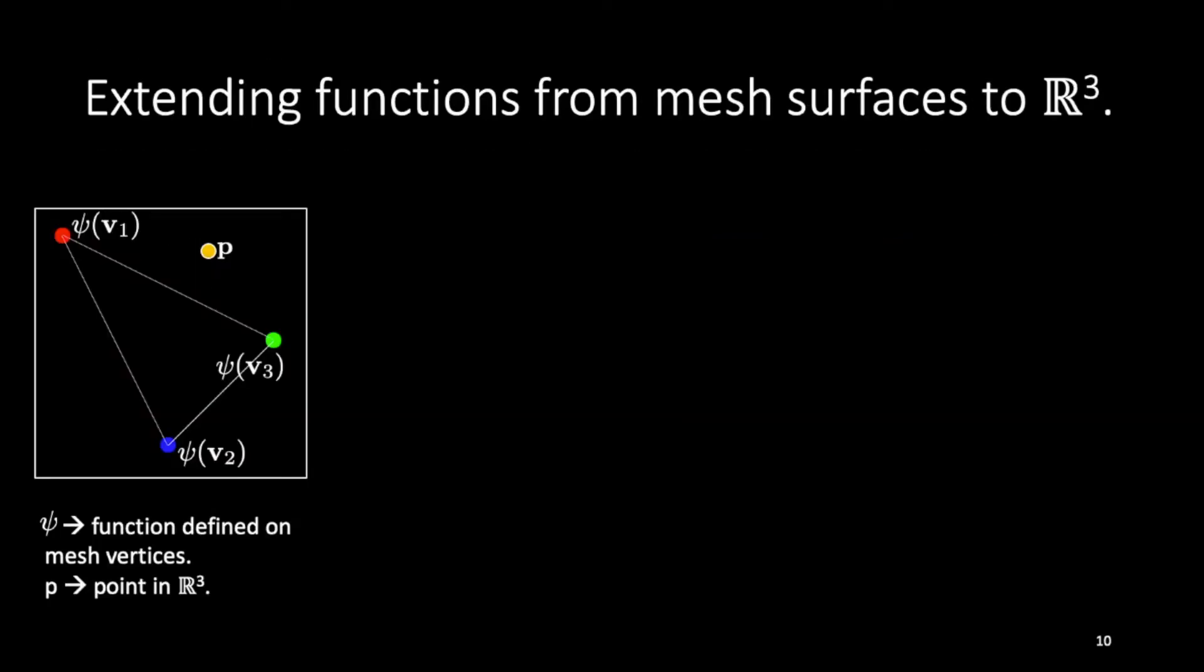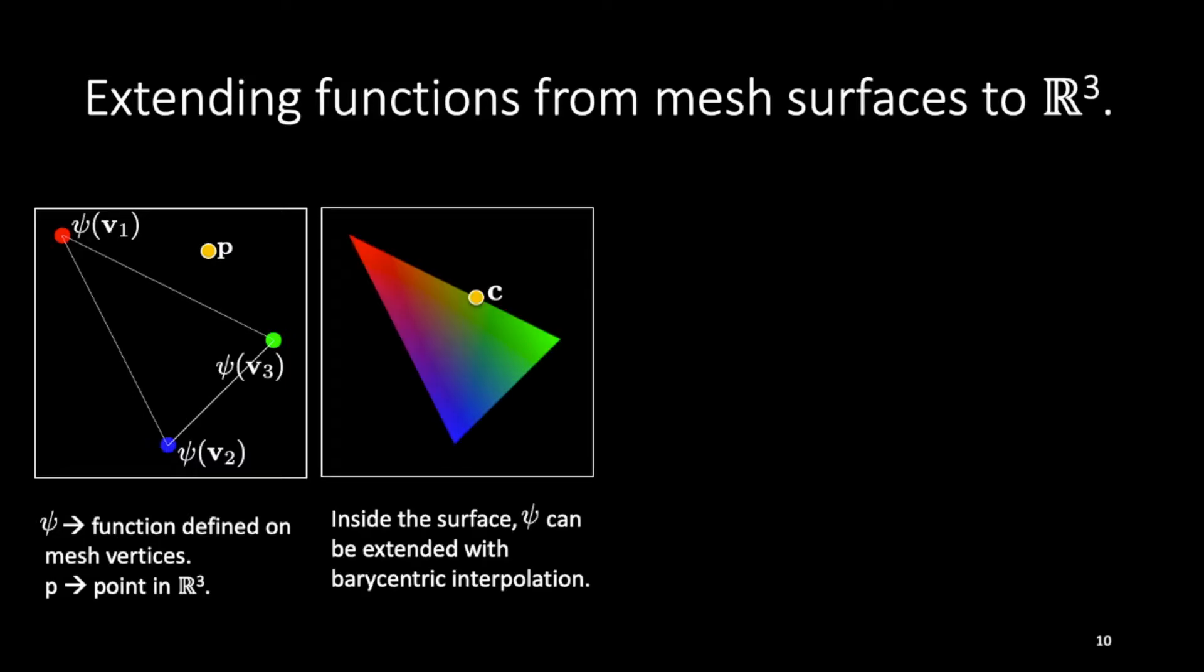Let us understand the diffusion process using a simple example. Let ψ be a function defined on the mesh vertices v1, v2 and v3. And let p be a point in R³ where we would like to evaluate the function ψ. Ψ can be easily interpolated within the surface using barycentric interpolation.